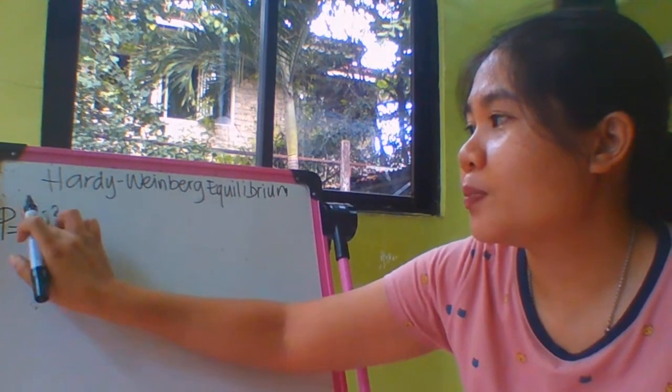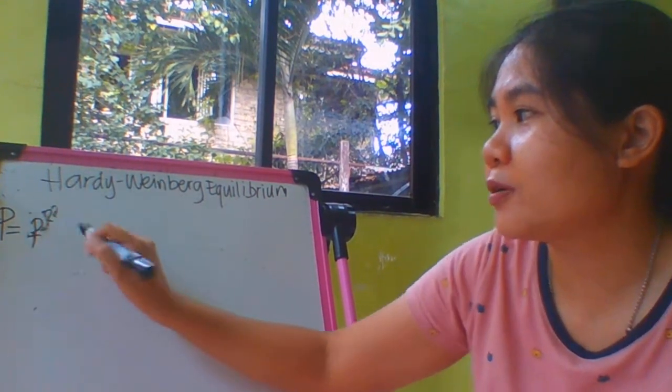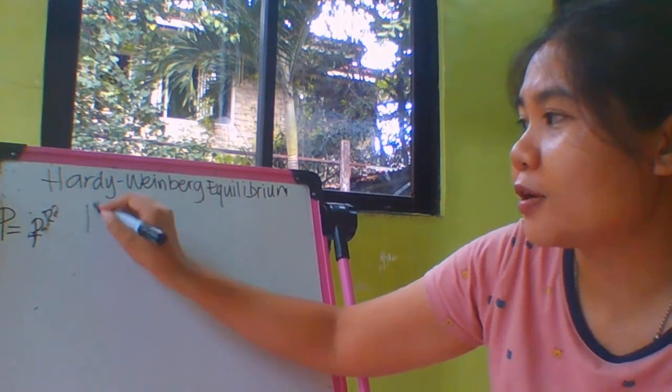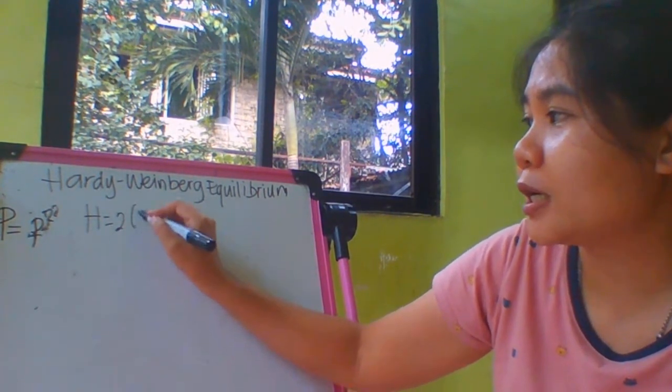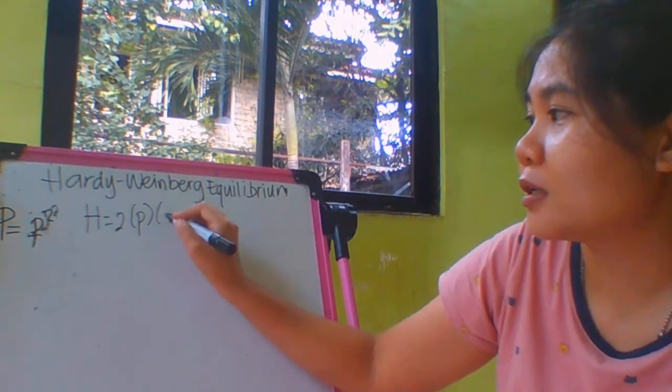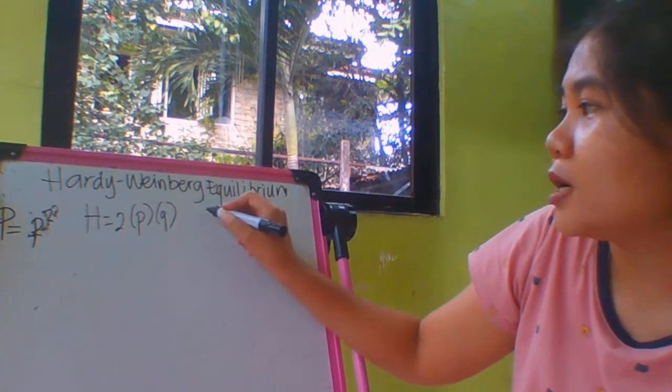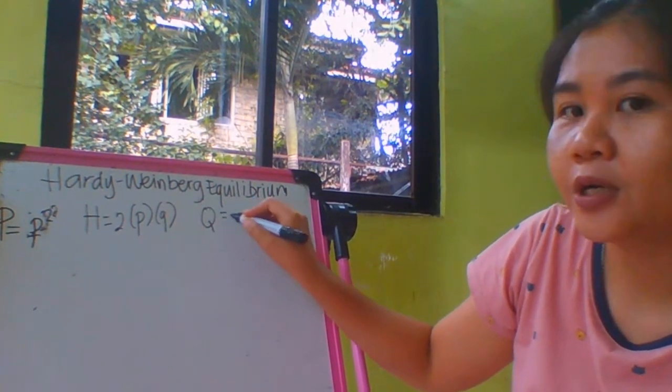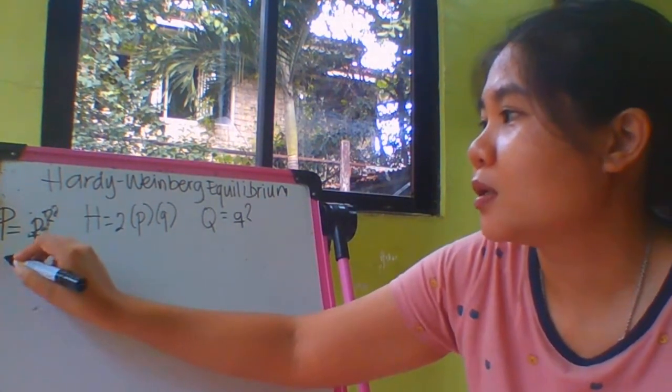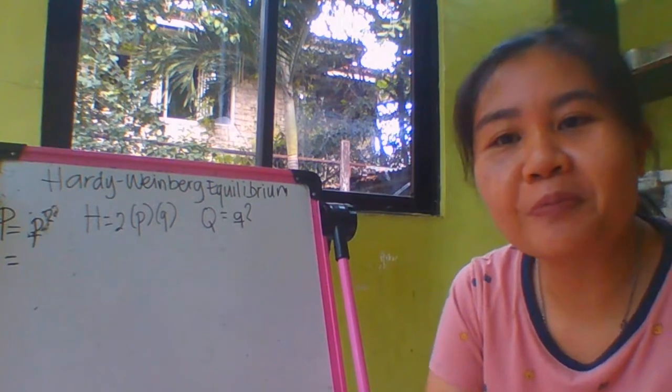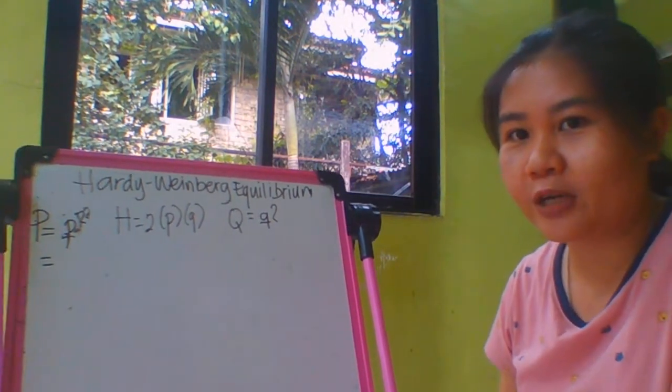So capital P equals small letter p squared. Letter H equals 2 times p times q. And letter Q equals small letter q squared.